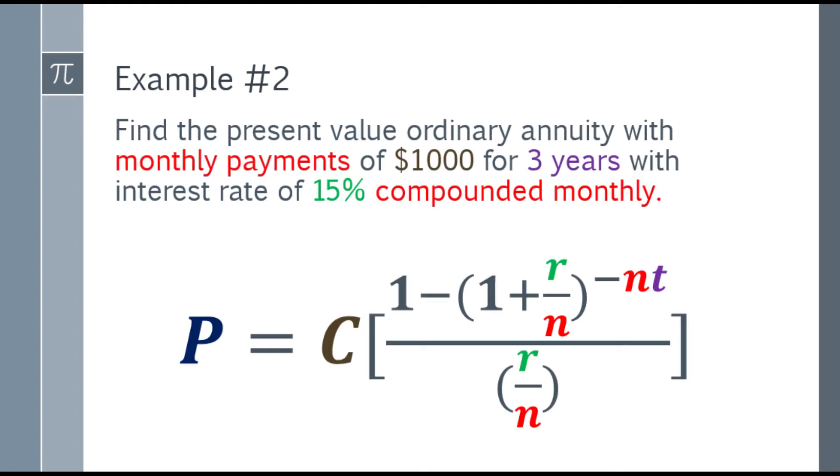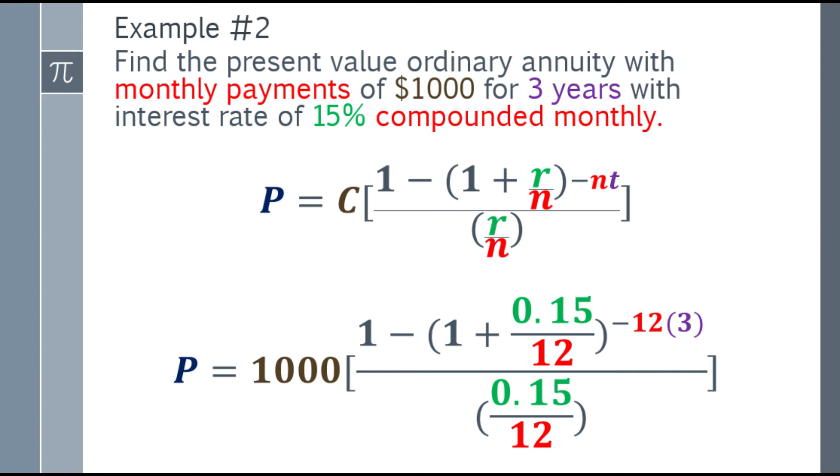Substitute the values. The cash flow is $1,000, the rate is 15%, and N is 12 because it's compounded monthly. Time is 3 for 3 years. So cash flow is $1,000 times the quantity. Numerator: 1 minus parentheses 1 plus 0.15 over 12, exponent negative 12 times 3. Denominator: 0.15 over 12.